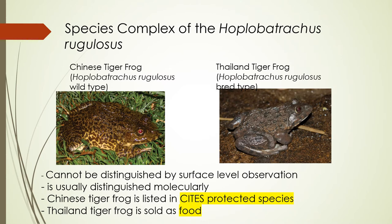This is the species complex of Hoplobatrachus rugulosus. In the left picture you see the Chinese tiger frog or the wild type, and on the right side the Thailand tiger frog or the bred type. When you're in the field, you cannot tell which one is the wild type or which one is the bred type — we usually distinguish them using a molecular marker like cytB or other genes. The Chinese tiger frog or wild type is listed as the only Class 2 frog that is nationally protected in China, while the Thailand tiger frog is sold in the market as food.